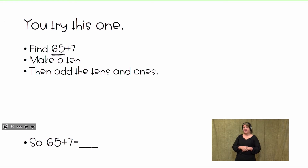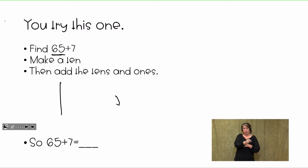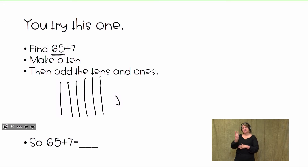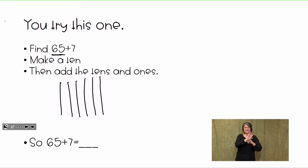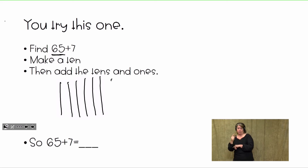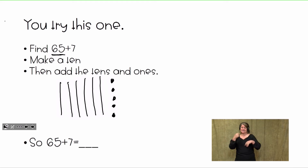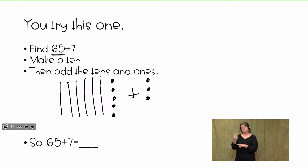65: the 6 is in the tens place, so I'm going to draw six rods: 1, 2, 3, 4, 5, 6. I drew six rods to represent the 6 in the tens place. I'm going to draw five cubes to hold the ones place: 1, 2, 3, 4, 5. The rest of our equation says plus 7, so I'm going to add seven more cubes: 1, 2, 3, 4, 5, 6, 7.